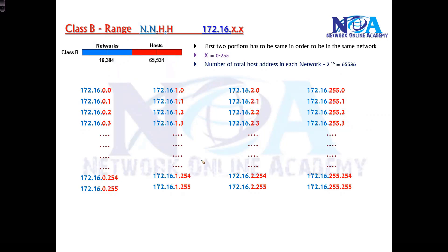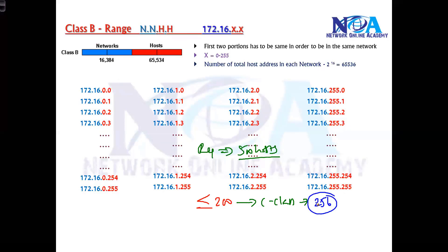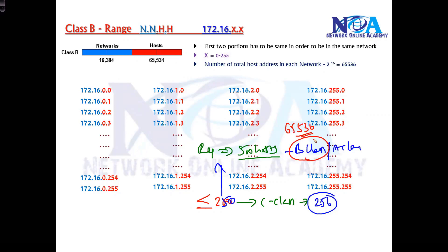If your requirement is 500 hosts, you need to consider the right class. If the requirement is less than or equal to around 250, you can go with C class since it supports 256 addresses per network. If your requirement is about 250 or more, you go with B class or A class. In B class you can get up to 65,536 addresses, or 65,534 usable host addresses after subtracting two.